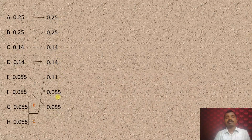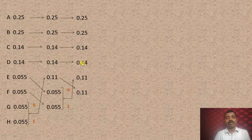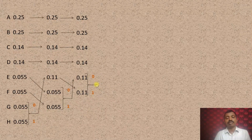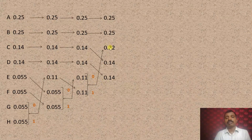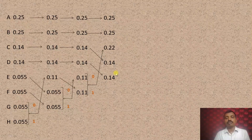Again the symbols are arranged in decreasing order of probabilities. Then combine the last two symbols with probability 0.11. This 0.11 is placed below 0.14 and then moved accordingly. Again combine the last two symbols, assign 0 for one and 1 for another, giving a combined probability of 0.22. This 0.22 is placed below 0.25 so the list remains in decreasing order. Then combine the last two symbols, giving 0.28, which is placed at the top.